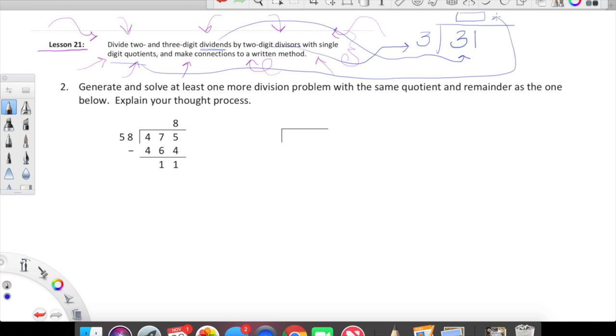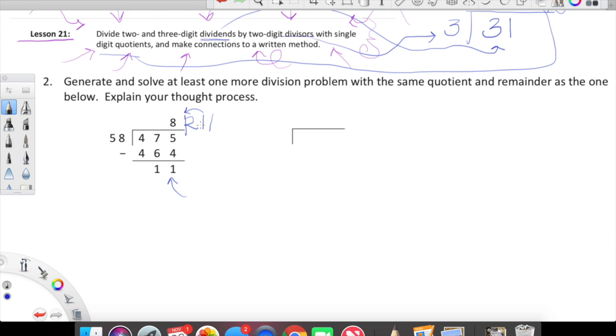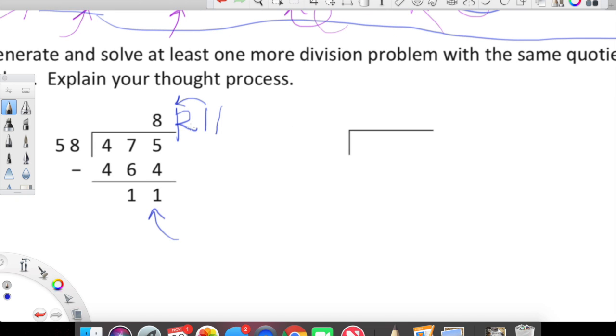And then, of course, the remainder would be anything left over. Here we're going to find something that has the same quotient and the same remainder. It looks like Eureka didn't quite finish expressing the final answer for this problem, so I'm going to help you out, Eureka. We had 11 left over, so we're going to write out our remainder right up here. Our quotient here is 8 remainder 11.